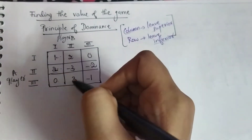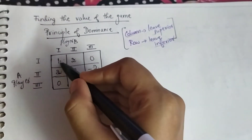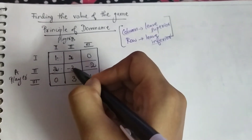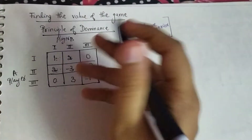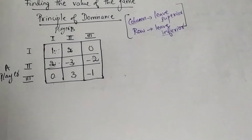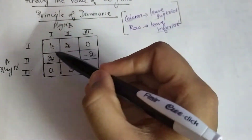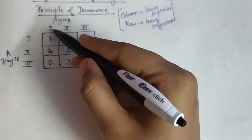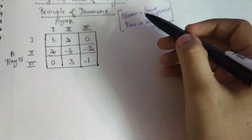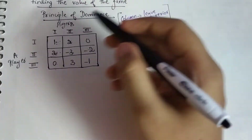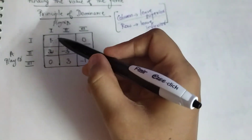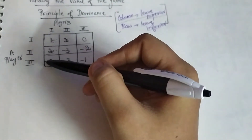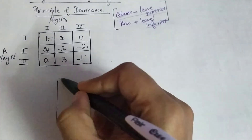Now consider the columns. Comparing column one and column two: one is less than two and two is greater than minus three — ruled out. Comparing column one and column three: one is greater than zero, two is greater than minus two, and zero is greater than minus one. All three values are holding true. In column-wise comparison, you leave out the superior one. The superior column here is column one — that complete column is superior, so you leave it out and write the remaining ones.